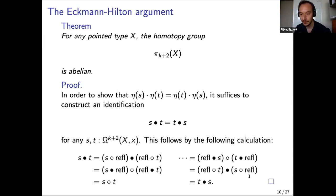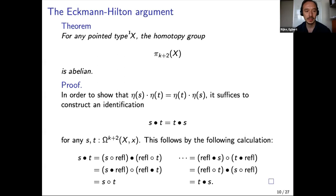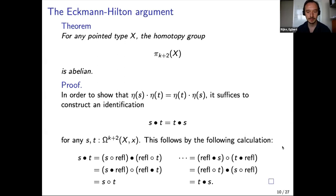Anja asks: when we write it this way, do we somehow forget about the point of the pointed type? The η is applied to elements of the pointed type X, so when speaking of elements of a pointed type it will be elements of the underlying type — you don't really forget about the point, but it's just the underlying type.